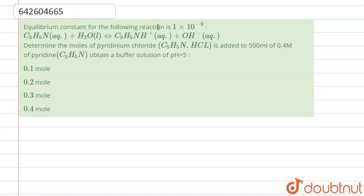Equilibrium constant for the following reaction is 1 × 10^-9, this is Kb. We have a reaction: C5H5N (aqueous) + H2O (liquid) forms C5H5NH+ and OH-. It is saying determine the moles of pyridinium chloride